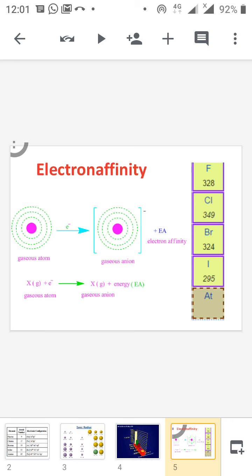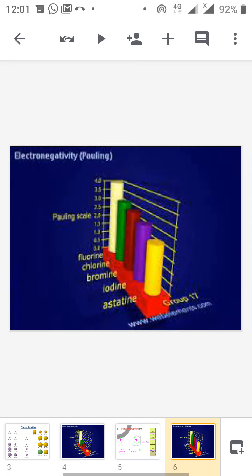After that, electron affinity decreases. Next is electronegativity. Electronegativity is also very high for fluorine, then it decreases down the group.